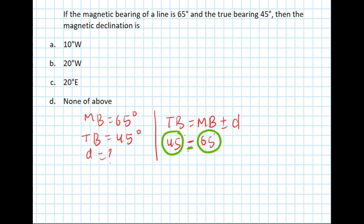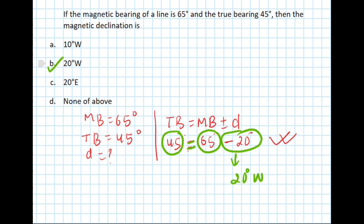We need to determine what makes 45 and 65 equal. If we subtract 20 degrees from 65, it equals 45 — so 65 minus 20 equals 45. Therefore the declination is negative 20 degrees, and negative 20 degrees means 20 degrees west. Our answer is 20 degrees west — option B.